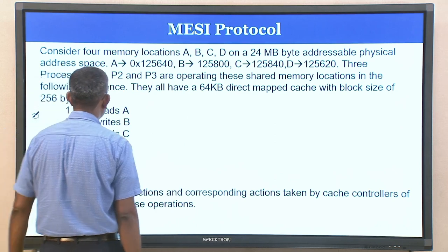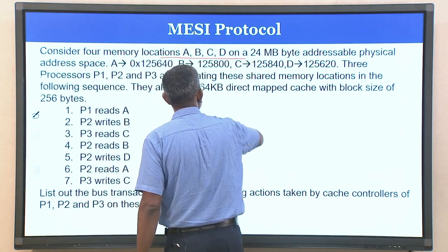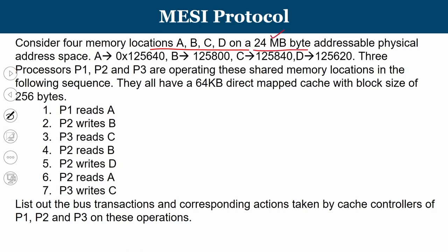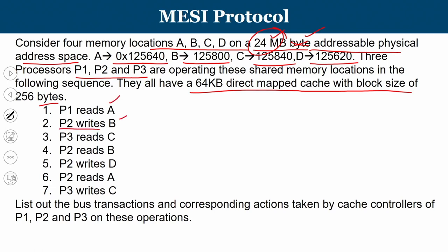Now consider a third question. There are four processors and four memory locations A, B, C, D in a 24 MB byte-addressable physical address space. Their hexadecimal addresses are: A = 0x125640, B = 0x125800, C = 0x125840, D = 0x125620. Three processes P1, P2, P3 operate on shared memory using a 64 KB direct-mapped cache with a block size of 256 bytes. We need to determine whether A, B, C, D are in the same or different cache blocks.